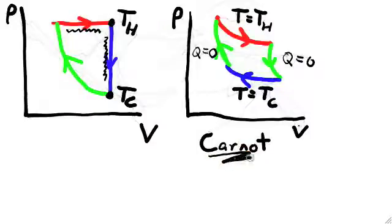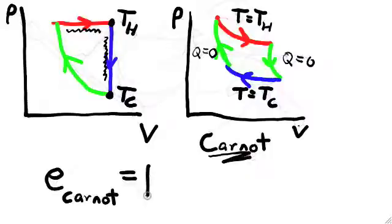As we'll discuss in a few minutes, the efficiency of the Carnot engine is given by 1 minus T-cold divided by T-hot, and this is the best you can do for any engine operating between the same two extreme temperatures.